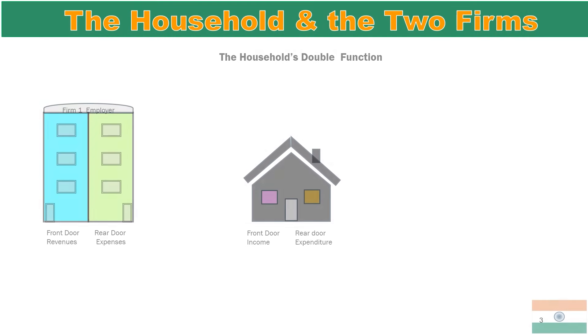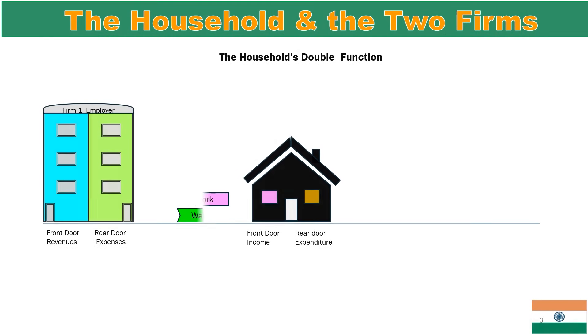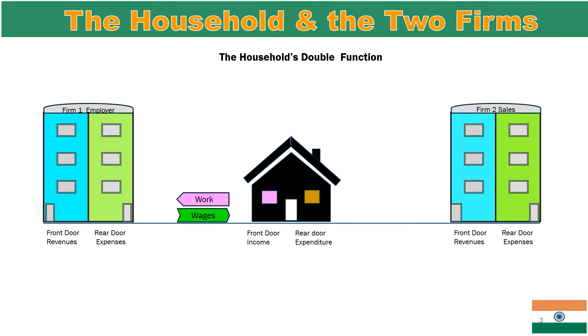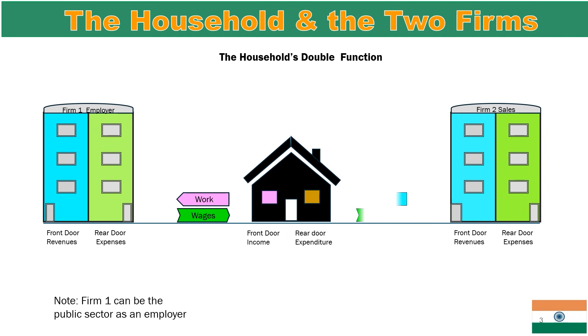The graphic household, in the center, works for the first firm, shown by the pink arrow, and receives income as a green wages arrow. The second firm supplies products shown by the blue arrow and receives payment as a green arrow in return.